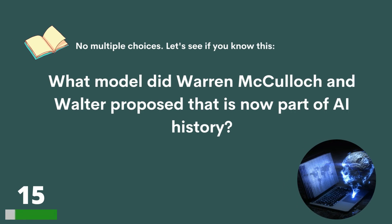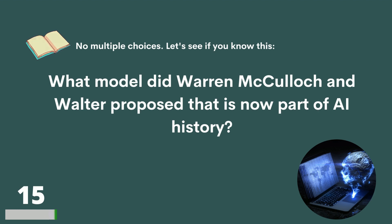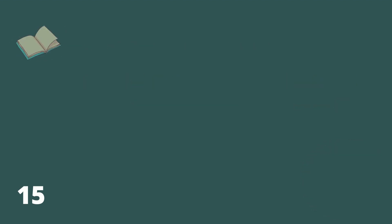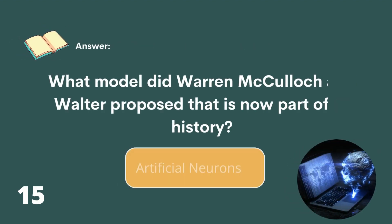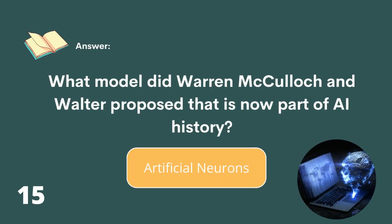What model did Warren McCulloch and Walter Pitts propose that is now part of AI history? The answer is Artificial Neurons.